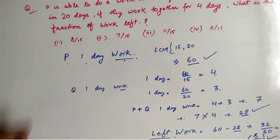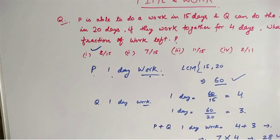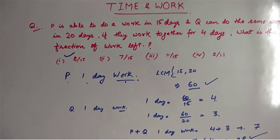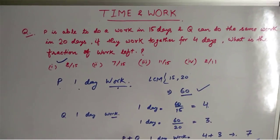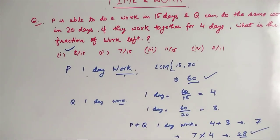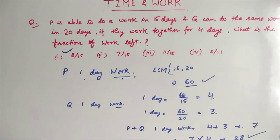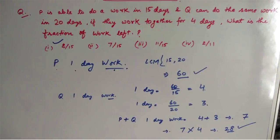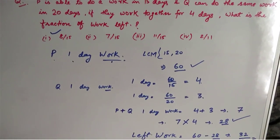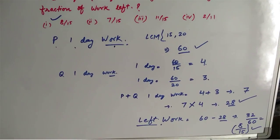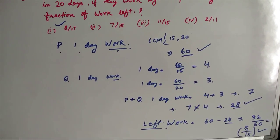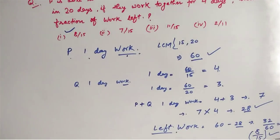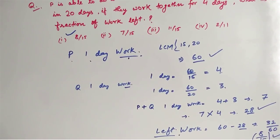Hence option 1 is correct — this is the amount of work that will be left after 4 days. As you can see, there are no fractions involved and we have reduced our calculation to simple integers, which is very helpful in the exam as there are very few chances of calculation mistakes and it takes less time as well.